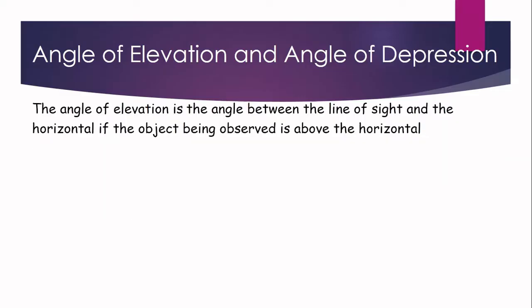The angle of elevation is the angle between the line of sight and the horizontal if the object being observed is above the horizontal. We have already defined the line of sight. Now, the horizontal is also an imaginary line from the eye of the observer — this is the eye level.